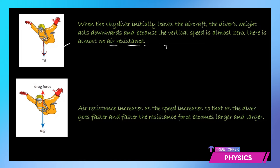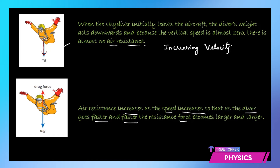He moves down with an increasing velocity. But as his velocity increases, the air resistance also increases. As he falls due to the acceleration due to gravity, he is falling with an increasing speed, and with that increasing speed the air resistance also increases. So as the diver goes faster and faster, the resistance force — the air resistance or fluid resistance — becomes larger and larger.